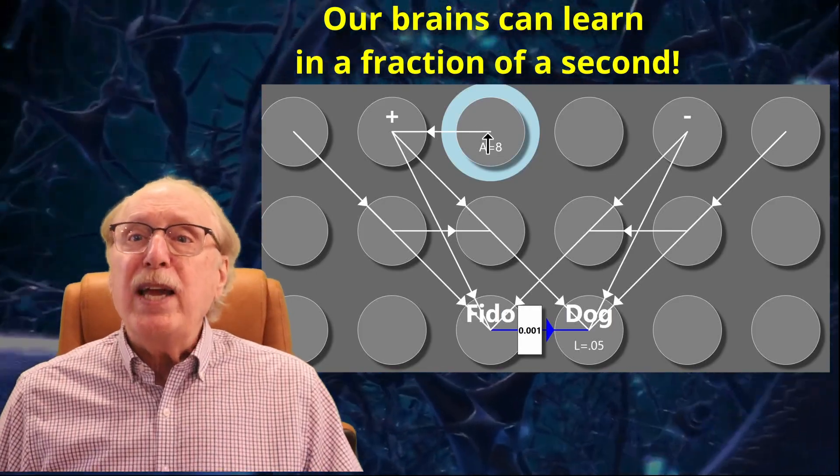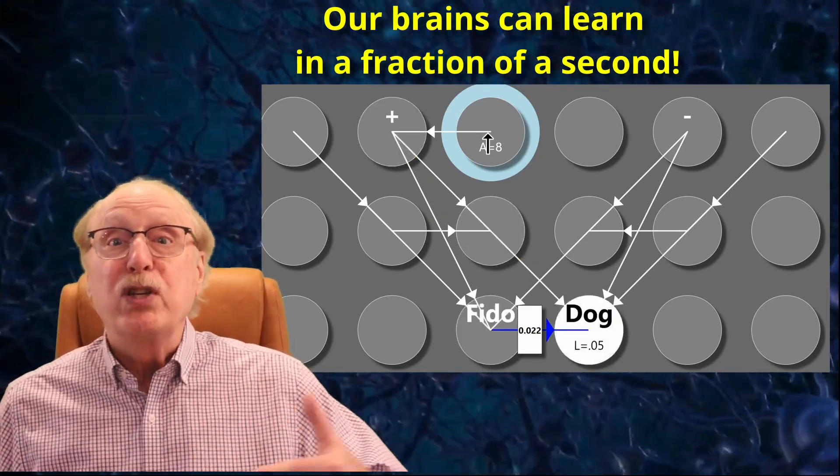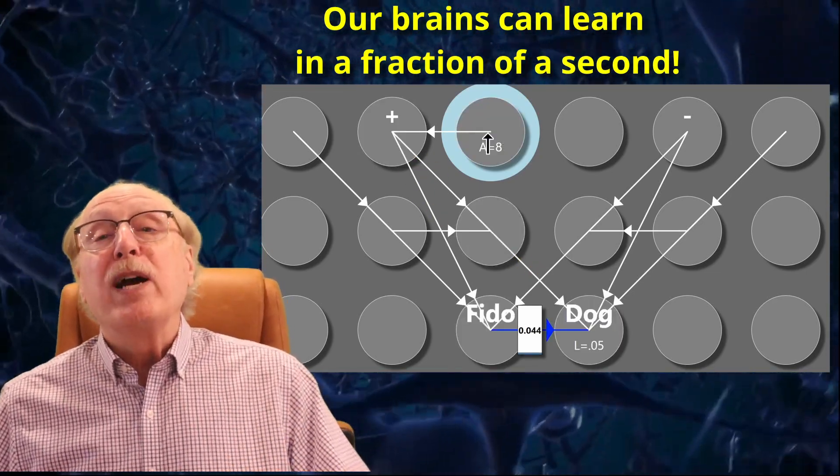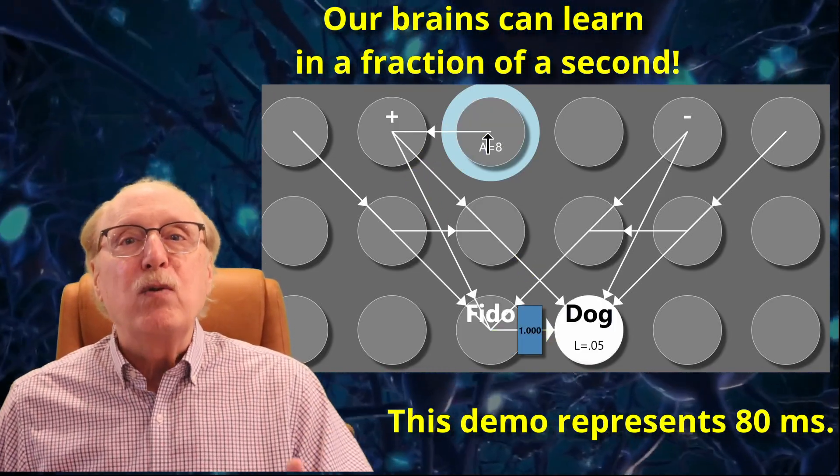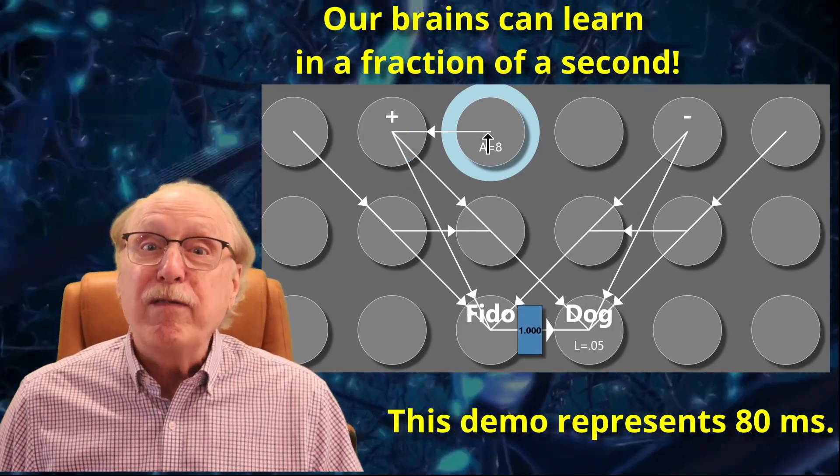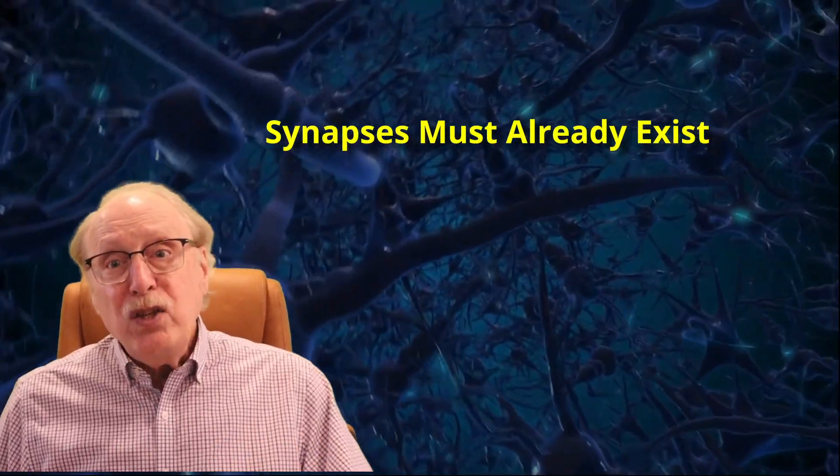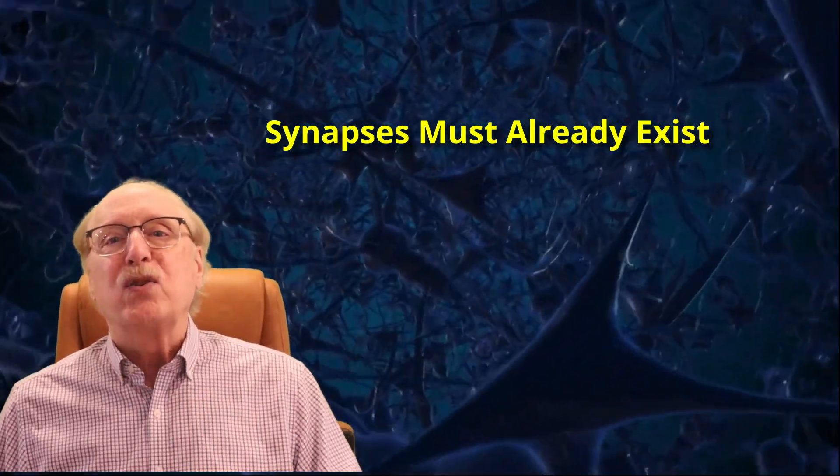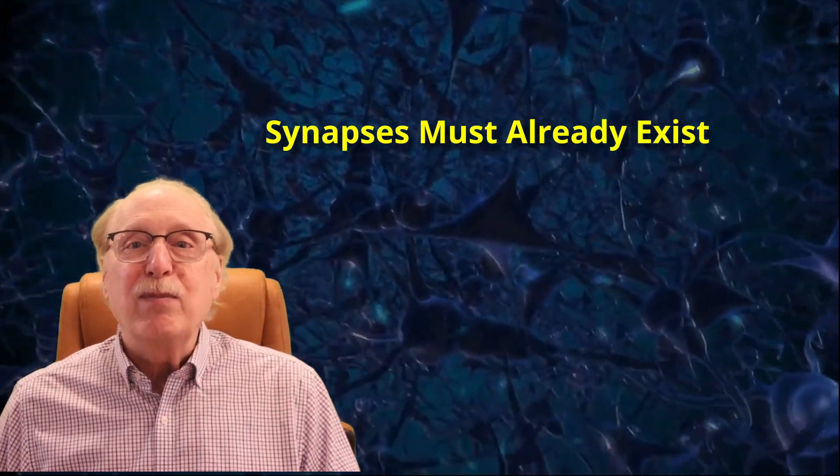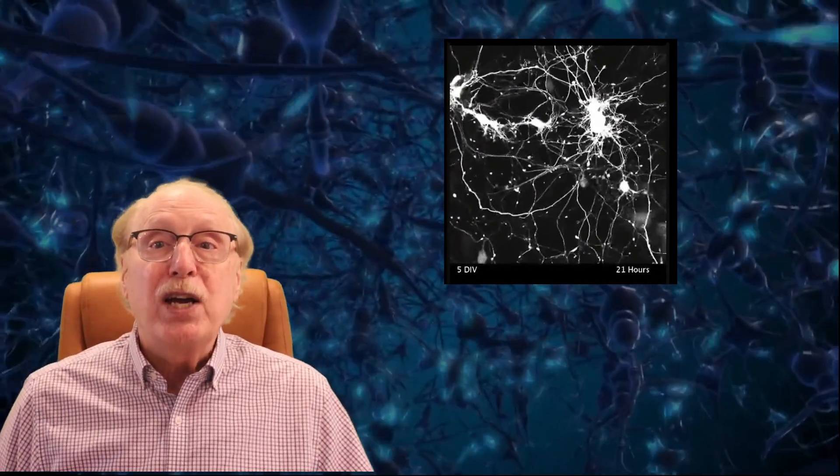In the optimal case, with both neurons firing bursts, one could expect to set a synapse weight from near zero to near one in perhaps 100 milliseconds. This is consistent with our observation that if I tell you that FIDO is a dog, you can begin to recall that fact and make use of it in a fraction of a second. All this assumes that the synaptic connection between FIDO and dog already exists, with a near zero weight waiting to be strengthened. As I mentioned in the previous video, the brain can grow new connections, but on a completely different time scale.